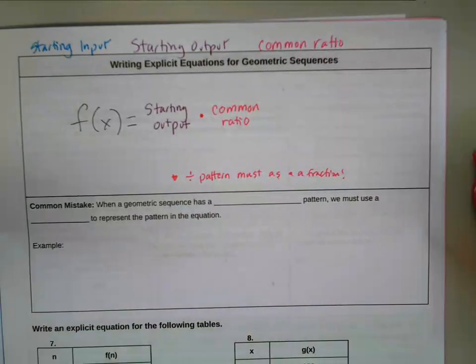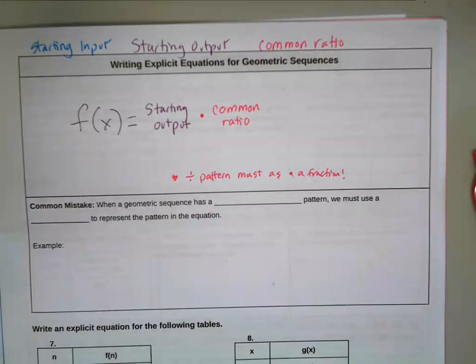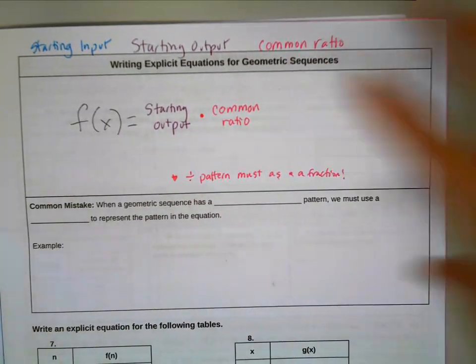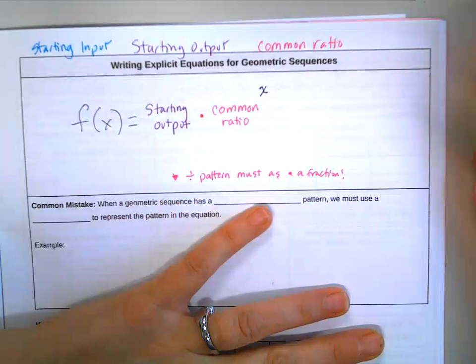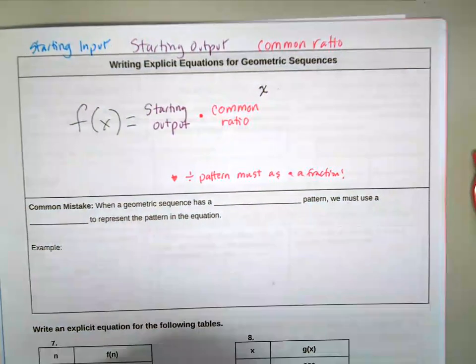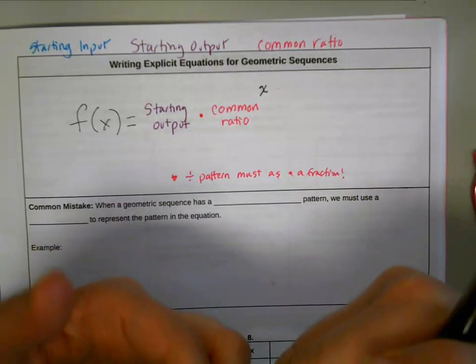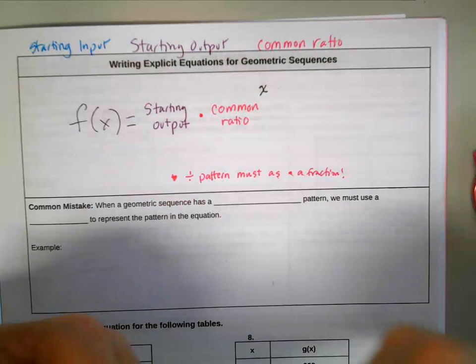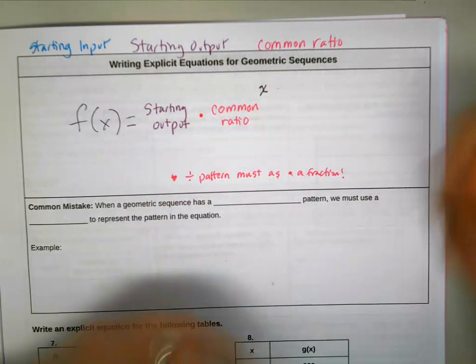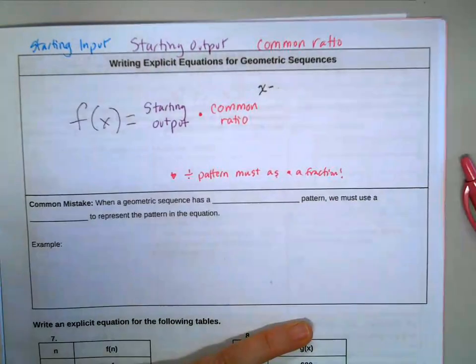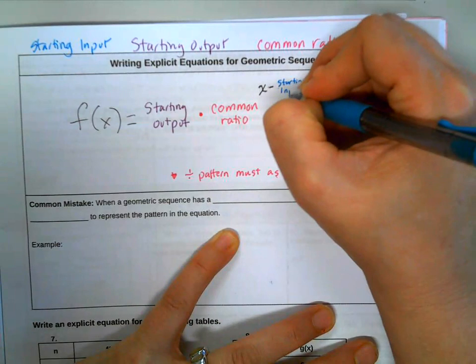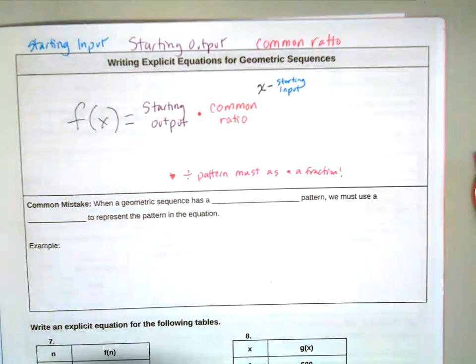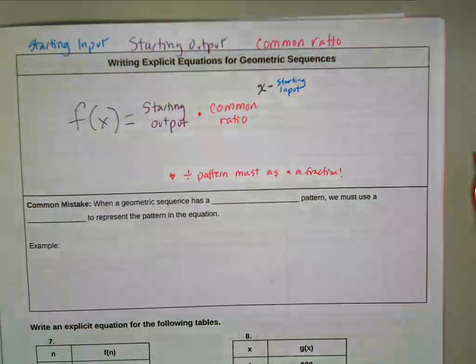So the thing is, we're going to do that over and over and over again. And when we multiply over and over again, we can condense that. Instead of writing times common ratio times common ratio times common ratio, we're going to take it to the x power because that's how many times we're going to do it. But just like before, if we start on the first term, my starting output is on the first term instead of on the zero term or the zero input, we need to subtract the starting input.